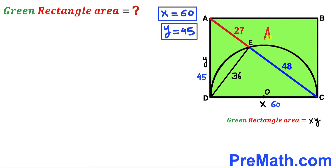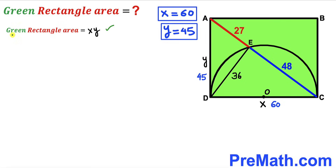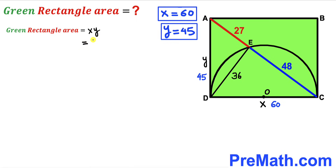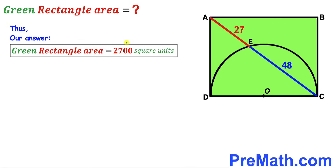For the final step, we calculate the area of the green shaded rectangle ABCD. Area = x × y = 60 × 45 = 2700 square units. So the area of the green shaded rectangle ABCD is 2700 square units — that's our final answer.